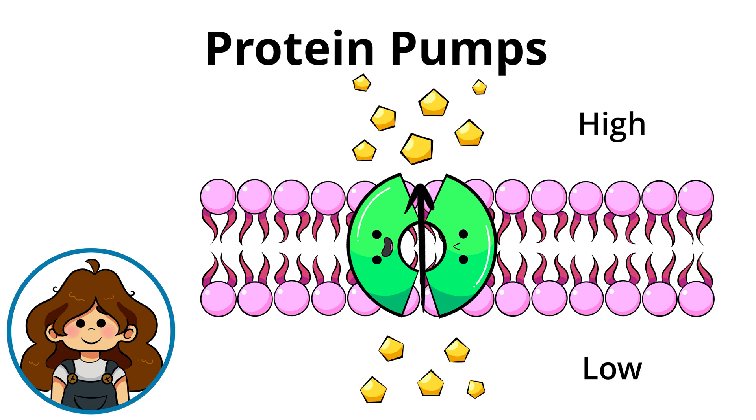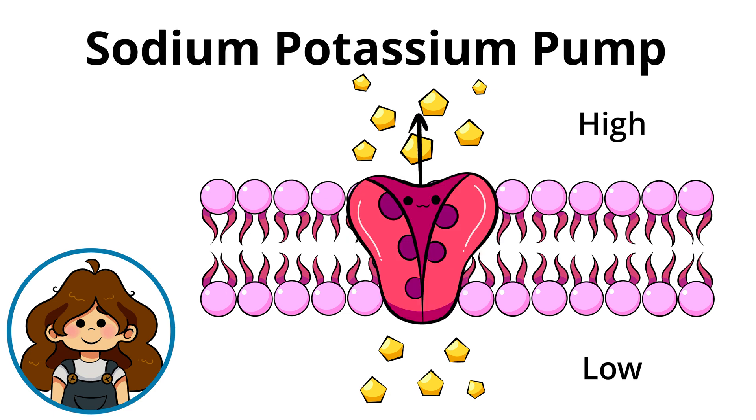To help molecules move along, special proteins called protein pumps use energy to push molecules across the membrane. For example, the sodium-potassium pump helps nerve cells transport signals along.